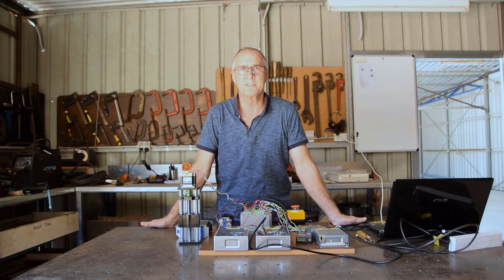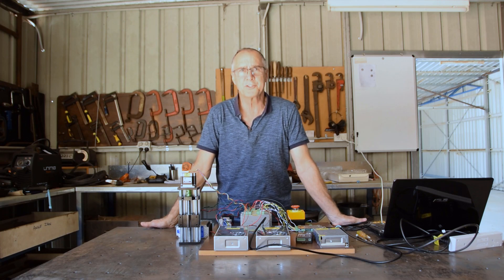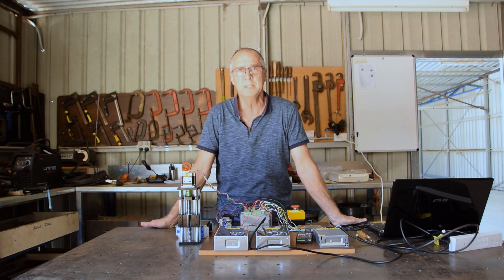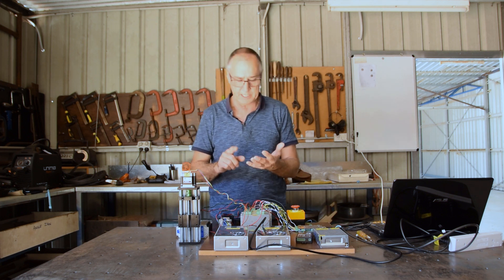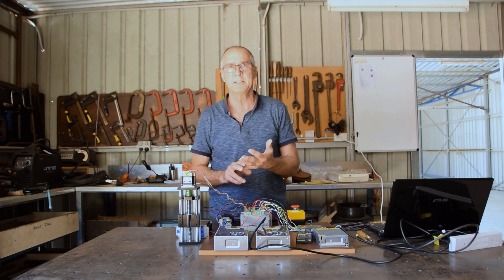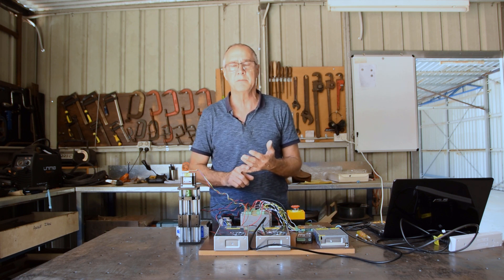G'day it's Rusty from Rusty's Metal Cut Signs and Designs and welcome to part two of our video series on how to build a CNC plasma cutting table. Just a brief recap of the first video where we talked about the components we need to build one. We needed a plasma cutter and we're using the Unimig Razor Cut 45.